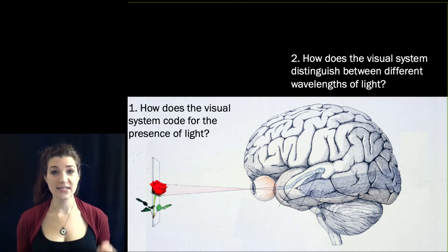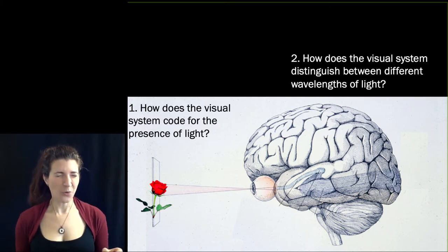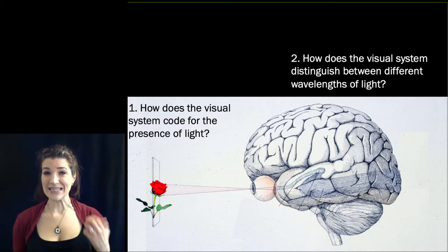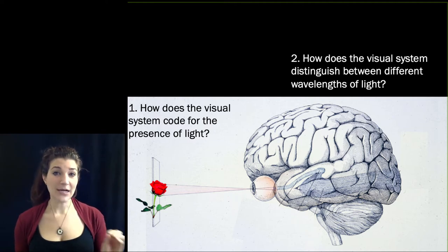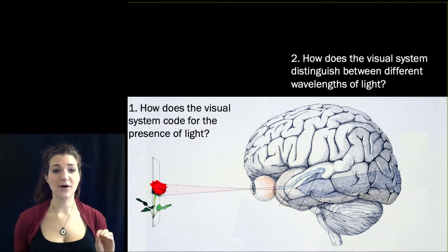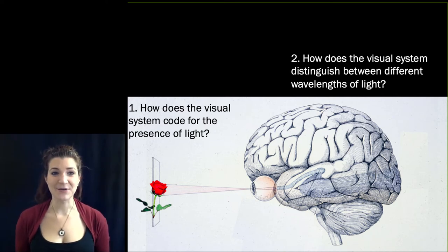What is the information that the brain is getting? Brains, of course, can't actually see. Brains can't respond to light. Brains can only make sense of a specific type of electrochemical change: the neural code. So let's see where that comes from.